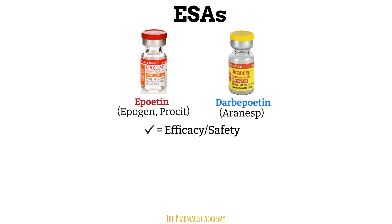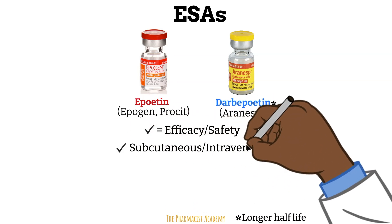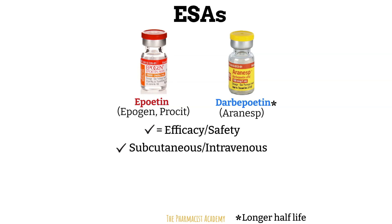Epoetin was first approved, and then darbepoetin came along. Darbepoetin was marketed as having a longer half-life than epoetin, which translated to less frequent doses. These agents may be administered subcutaneously or intravenously with similar efficacy and toxicity. Some studies have shown that subcutaneous epoetin has a longer half-life than the IV route and can achieve the target hemoglobin at lower doses, translating to reduced cost.